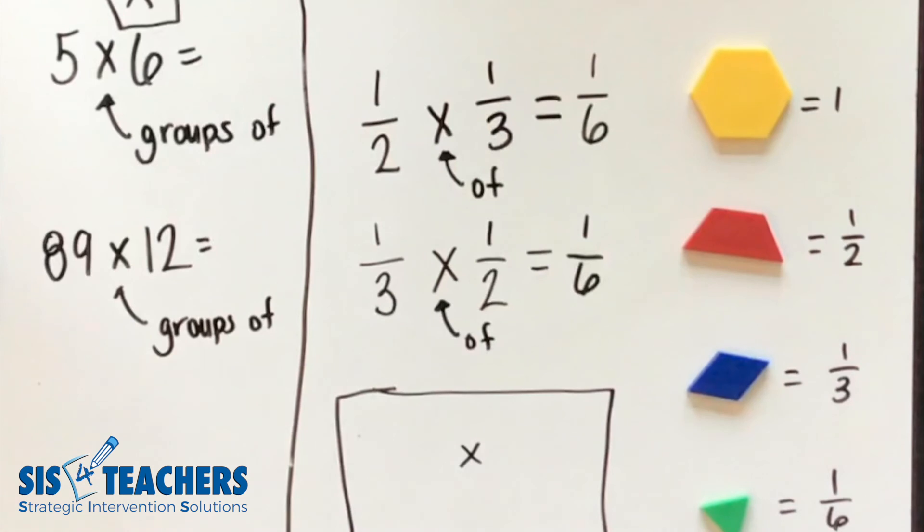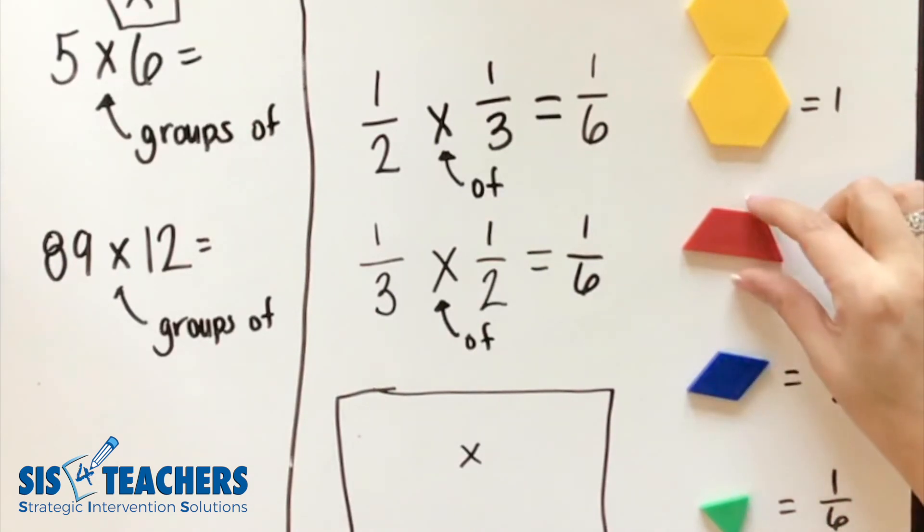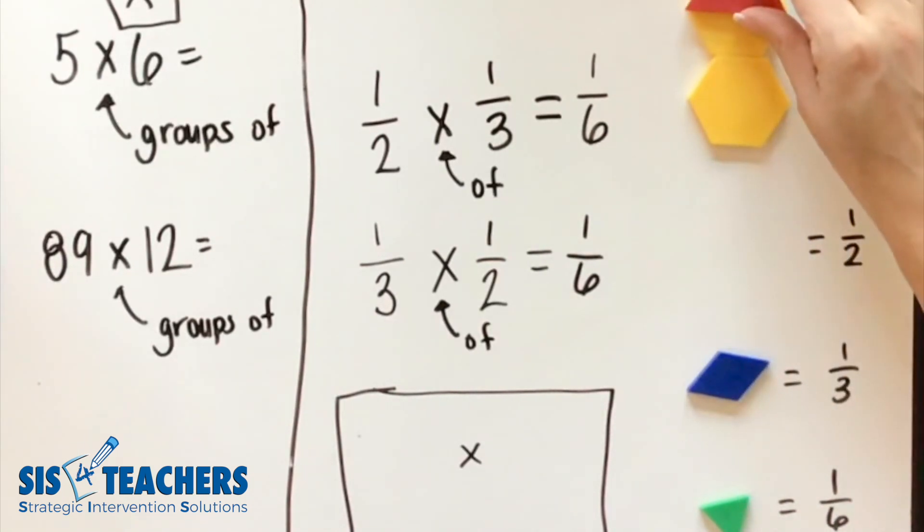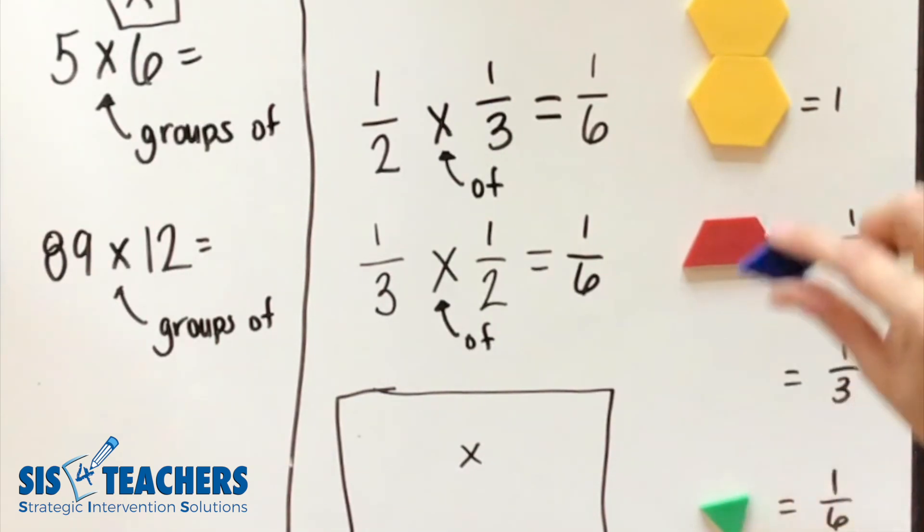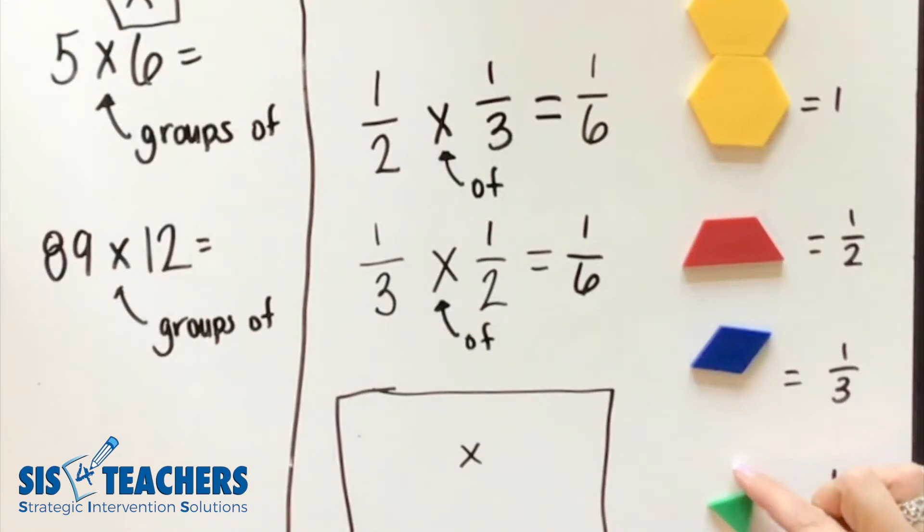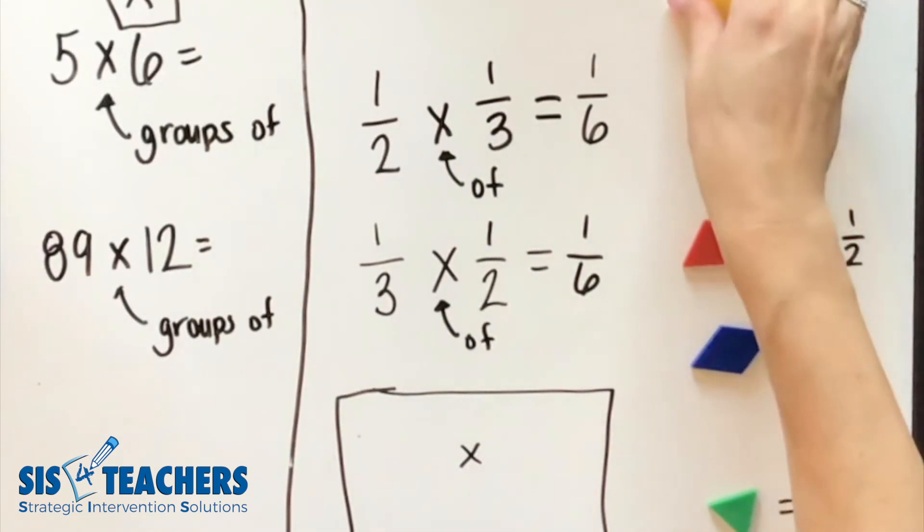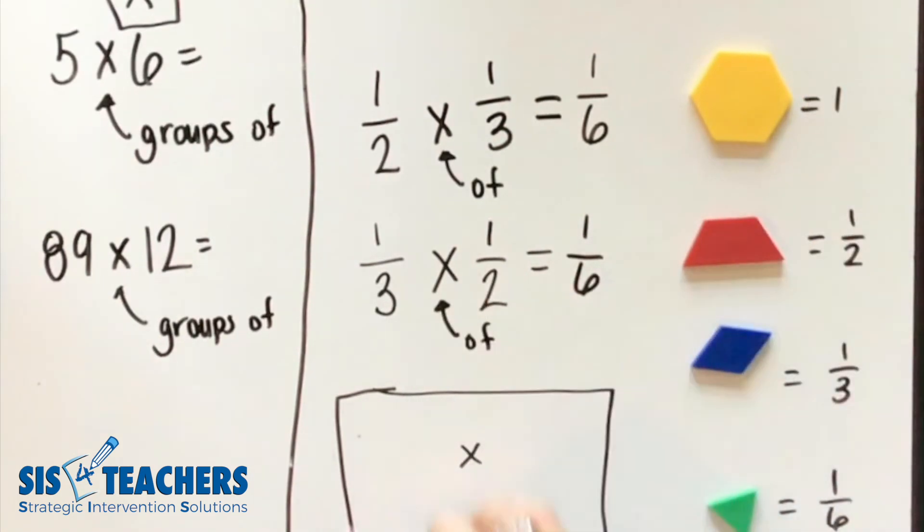You can also change the size of your whole if you want by making your whole worth two hexagons, which would then change the trapezoid to be worth one fourth. Our rhombus would now be worth a sixth and our triangle would be worth one twelfth. So can you create a problem or two using the pattern blocks you have to follow the sequence we're working with?